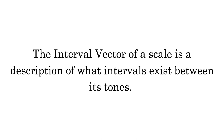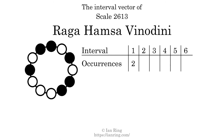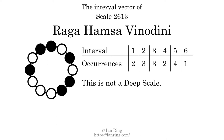The interval vector of a scale is a description of what intervals exist between its tones. There are 2 intervals with the size of 1 semitone. There are 3 intervals with the size of 2 semitones. There are 3 intervals with the size of 3 semitones. There are 2 intervals with the size of 4 semitones. There are 4 intervals with the size of 5 semitones. There is one interval with a size of 6 semitones. Each interval does not appear in this scale a unique number of times, so this is not a deep scale.